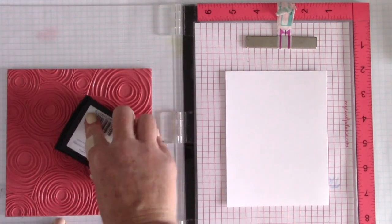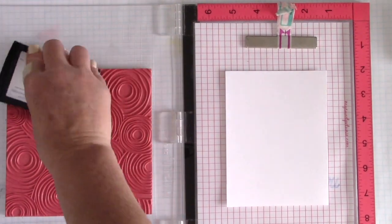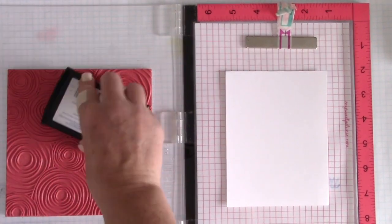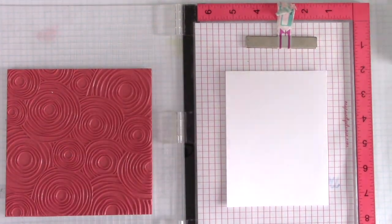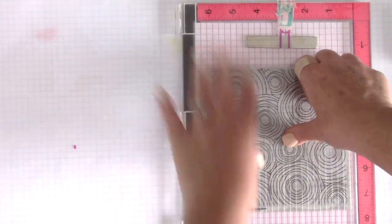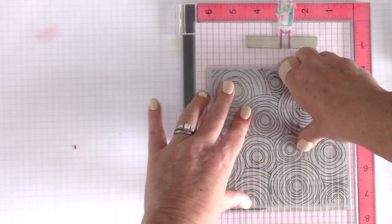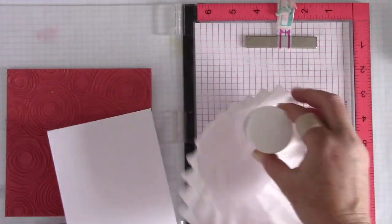Next I am going to ink up my stamp with Versamark ink. This is an embossing ink so it stays sticky for a longer period of time, allowing you to place embossing powder on top. I am getting mostly in the middle of the stamp—that is where it is going to stamp on the paper. Now I close the door again and press down firmly on all parts of the stamp because I really want a good impression all over the card stock.